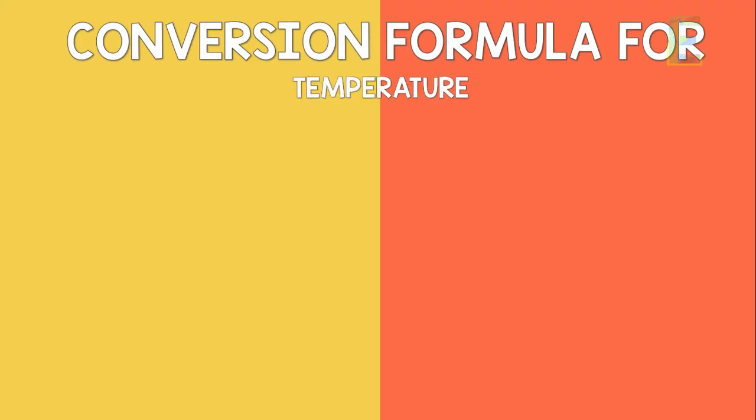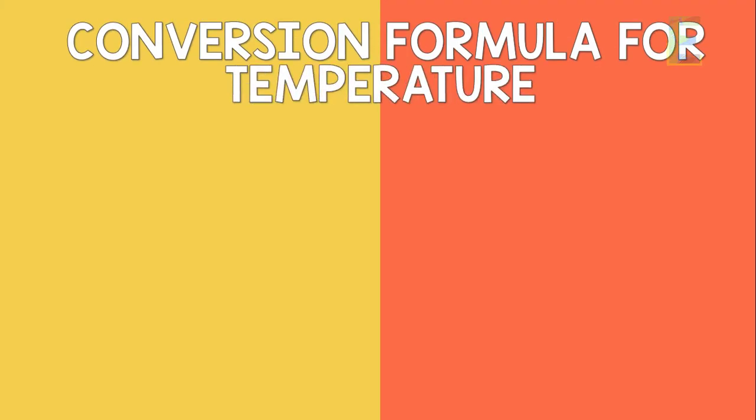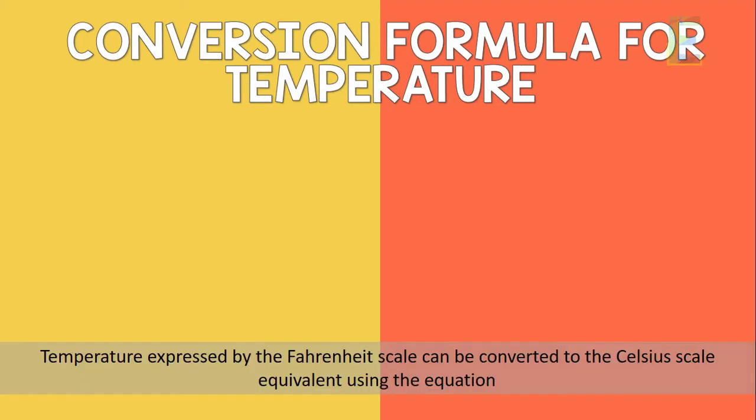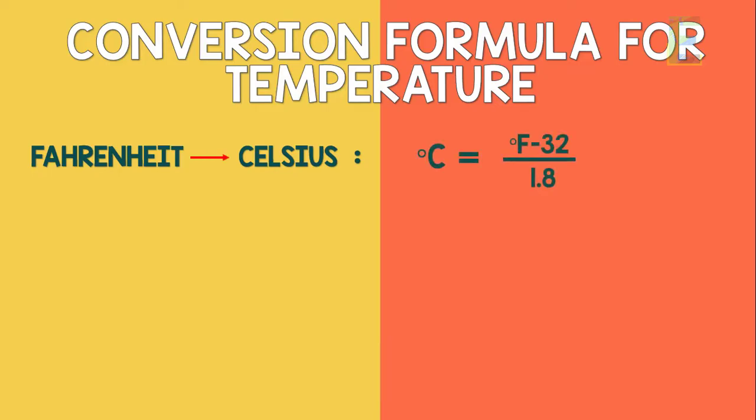The conversion formula for temperature is as follows. Temperature expressed by the Fahrenheit scale can be converted to the Celsius scale equivalent using the equation degrees Celsius is equal to degrees Fahrenheit minus 32 degrees all over 1.8.